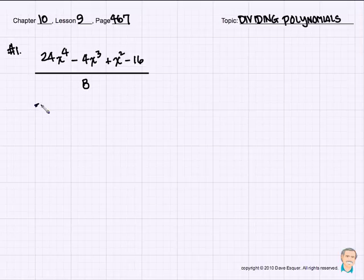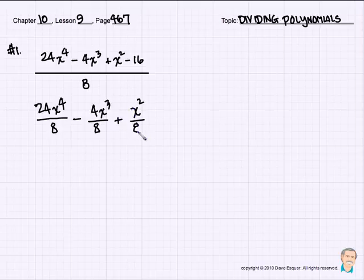And they look like 24x to the 4th divided by 8 minus 4x cubed divided by 8 plus x squared divided by 8 minus 16 divided by 8.